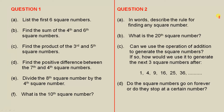Can we use the operation of addition to generate the square numbers? If so, how would we use it to generate the next three square numbers after 1, 4, 9, 16, 25, 36? That is, the next three that appear after 36.